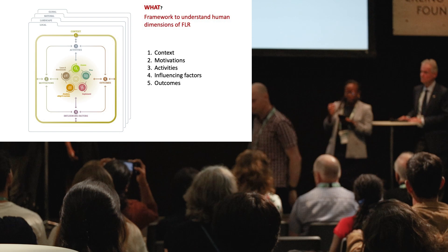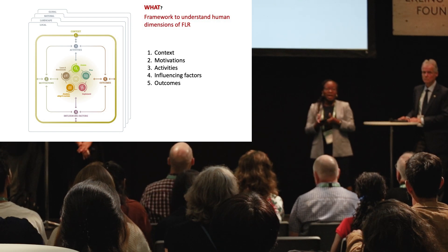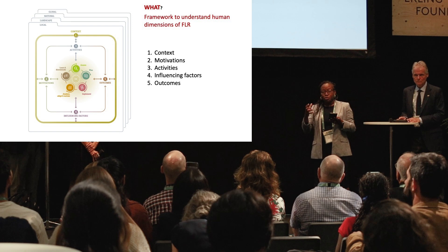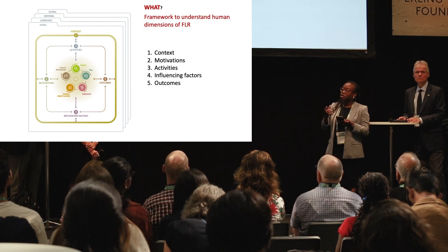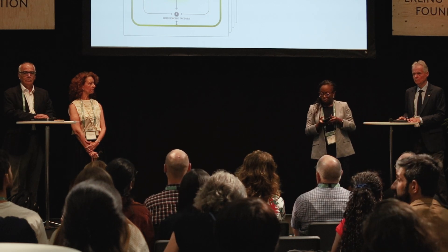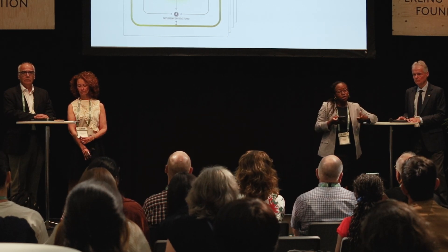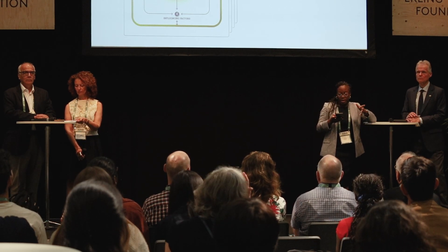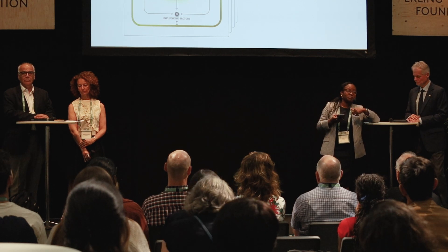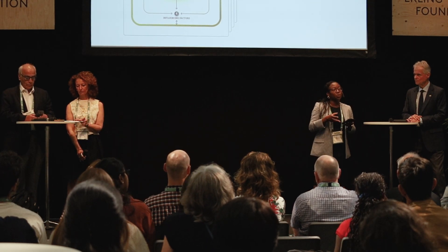We've identified five pillars of human dimensions. The first is context — the context in which FLR or any restoration takes place, such as actively managed rural landscapes that support local livelihoods, and the structural legacies and institutional conditions that characterize that context. The second pillar is the motivation of different stakeholders to restore, which translates into different ecosystem goods and services sought by different actors. The third pillar is about the restoration activities themselves, which should be informed and defined by the stakeholders in those landscapes.